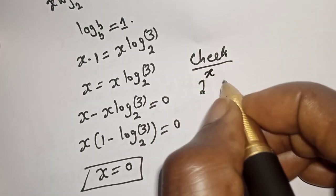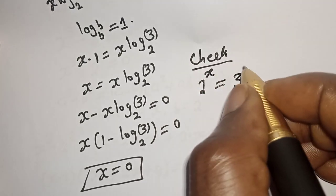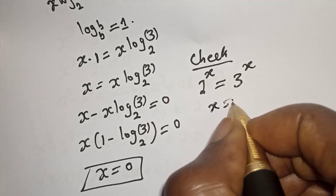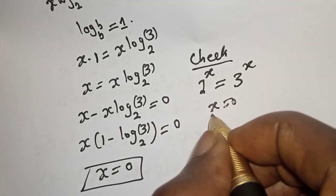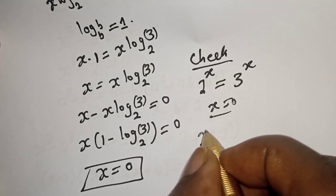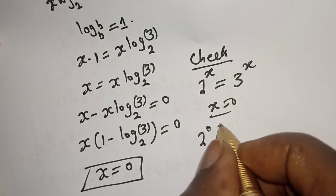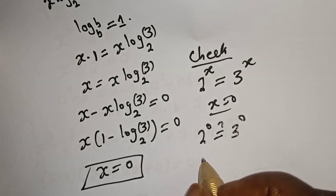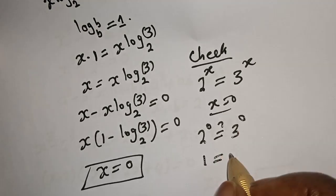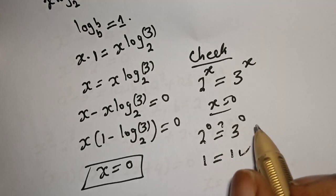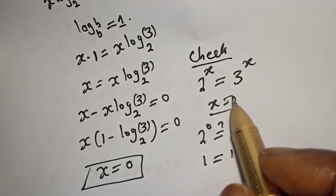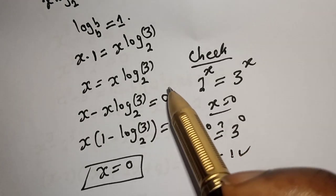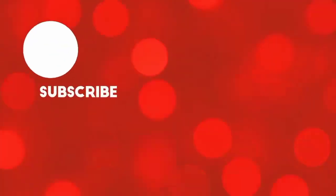2 raised to power s is equal to 3 raised to power s. When s is equal to 0, 2 raised to power 0 must be equal to 3 raised to power 0. But 2 raised to power 0 is 1, which is equal to 3 raised to power 0, which is also 1. This satisfies the given equation at s equal to 0. If you enjoy the class please don't forget to like, share, comment, and subscribe. Thank you.